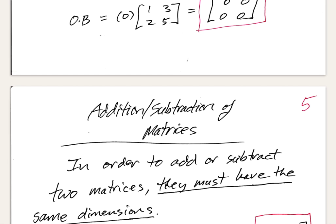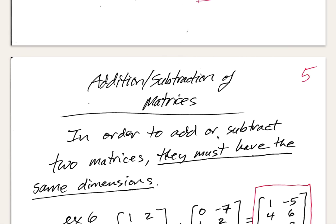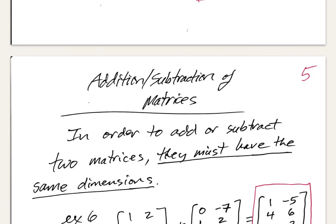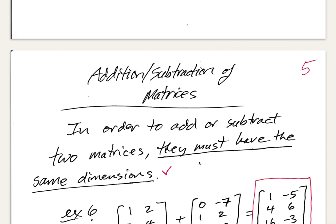Let's talk about addition and subtraction of matrices. In order to add or subtract two matrices, they must have the same dimensions — that's the necessary and sufficient condition to be able to add or subtract them.